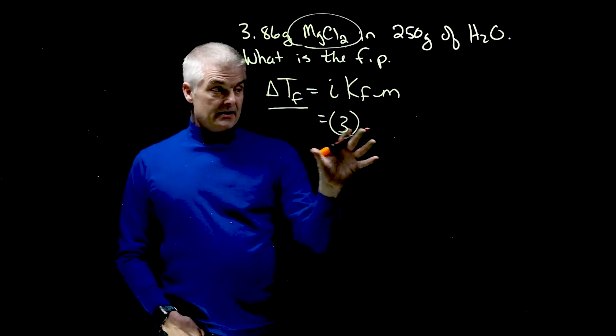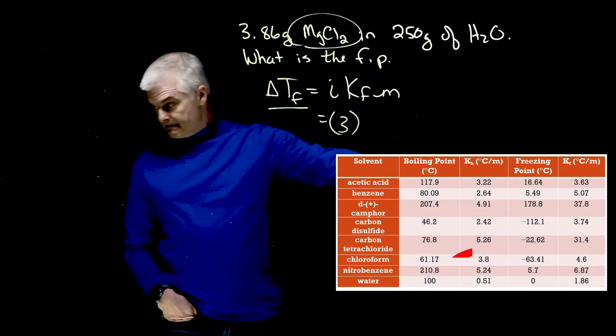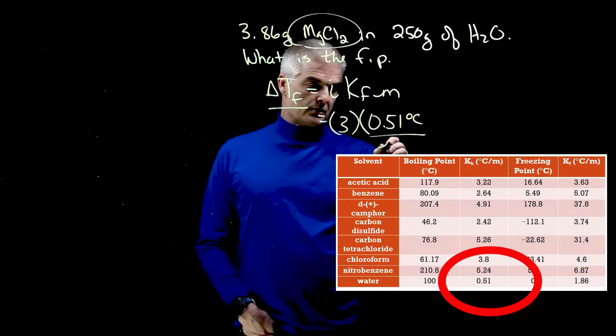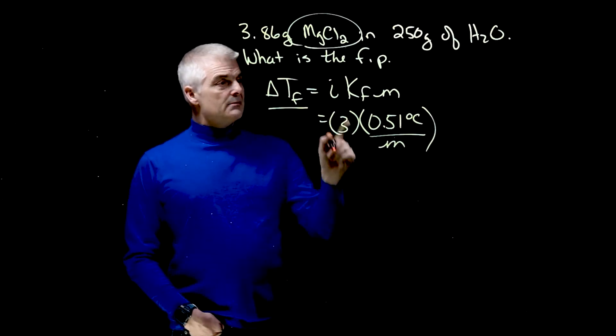Times the KF. Now if you look at this table, we can find that the KF is 0.51 degrees Celsius per mole. By the way, the 3 has no units.